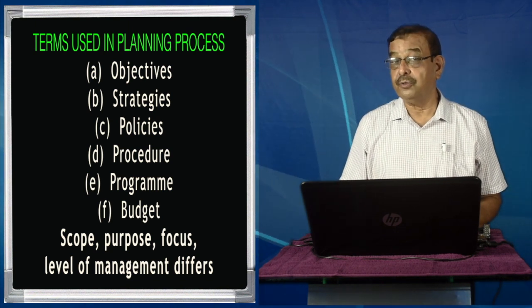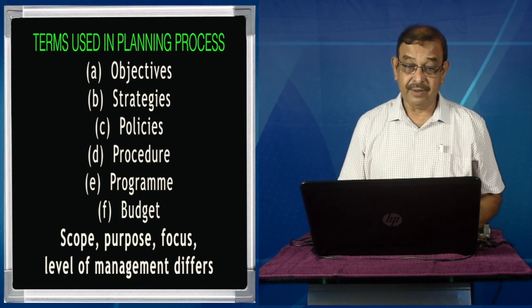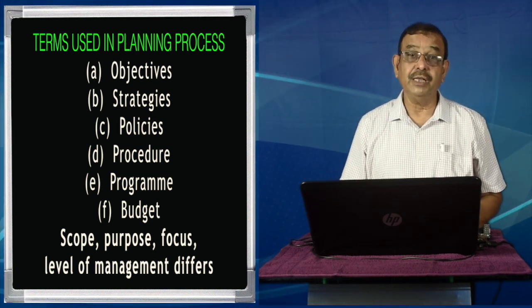Rules — meaning specific action or no action — can also be considered as a lower-level plan. These are all the different terms used in the planning process. With this we have come to the end of our planning module. We have discussed that planning is very important, it has certain premises, there are different types of plans, and the implications of all these things will vary from organization to organization, from function to function, and from level to level in an organization. Thank you.